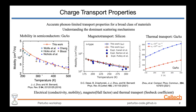one of our primary works was calculations of mobilities in semiconductors such as gallium arsenide. We have recently extended the scope of our transport studies to include magnetic fields, as evidenced in this middle plot. And our code is capable of computing thermal transport properties, such as thermal conductivities and Seebeck coefficients, as shown in this rightmost plot.